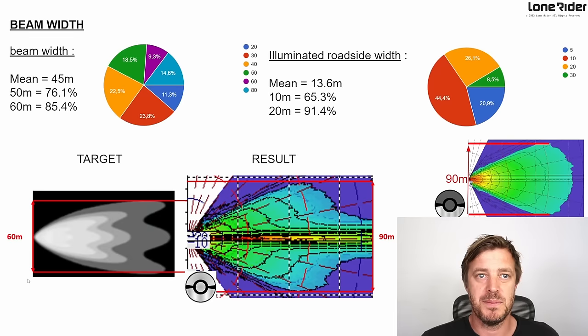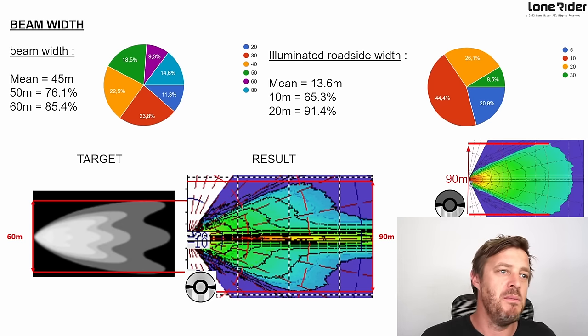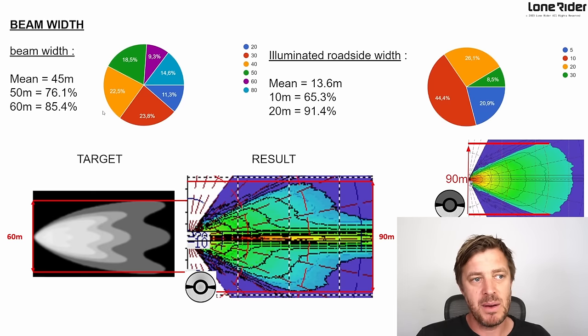So beam width is quite important for us, especially in the adventure rider community, because we can generally ride at slower speeds to navigate around obstacles off-road. There's a lot of hazards on the road from animals to people to just straight-up holes that you can get sunk into and never return from. So it's important for us to have this kind of width at a short distance so we can see what's coming from the left and right and be safe. The mean was 45 meters - that was essentially what everybody wanted.